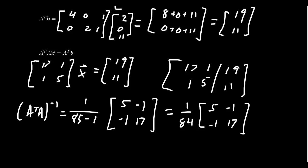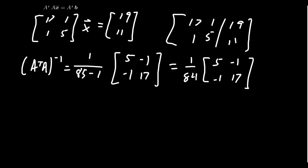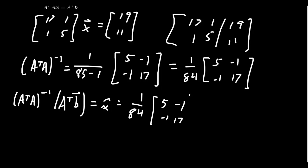And then you can multiply b, or I should say A transpose b, by this number. And so A transpose A inverse times A transpose b, this is going to equal x hat. And so we have 1 over 84 times 5, negative 1, negative 1, 17, times that by 19 and 11.